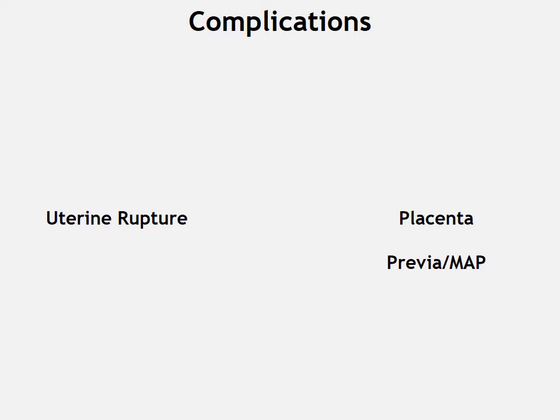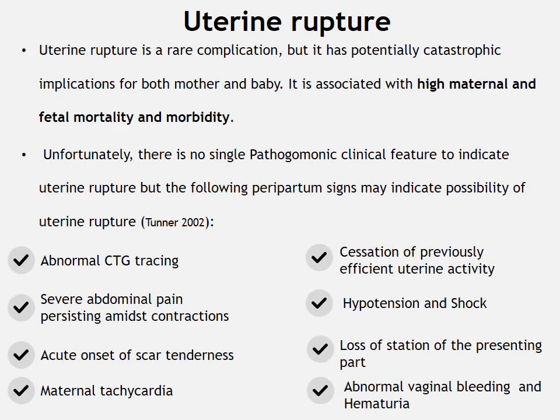There are two main complications associated with vaginal birth after cesarean section: uterine rupture and placenta previa or morbidly adhered placenta. Uterine rupture is a real but potentially catastrophic complication for both mother and baby, associated with high maternal and fetal mortality and morbidity. There is no single pathognomonic clinical feature, but peripartum signs include: abnormal CTG tracing, severe abdominal pain persisting between contractions, acute onset of scar tenderness, maternal tachycardia, cessation of previously efficient uterine activity, hypotension and shock, loss of station of presenting part, abnormal vaginal bleeding, and hematuria.